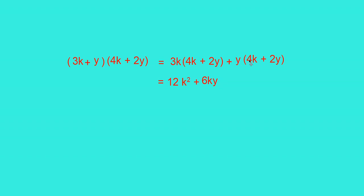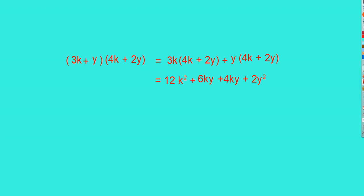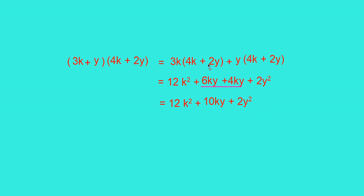Similarly, y into 4k gives plus 4ky, and y into 2y gives plus 2y squared. Now you can see 6ky plus 4ky, which you can write as plus 10ky. So the answer is 12k squared plus 10ky plus 2y squared.